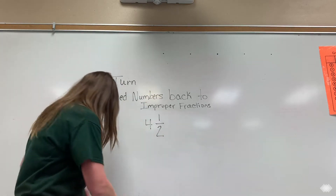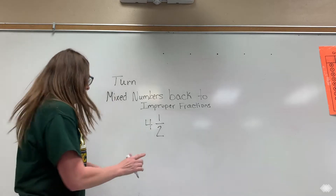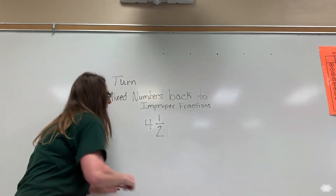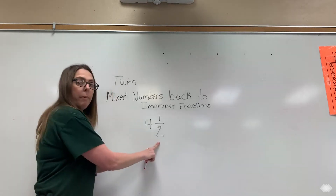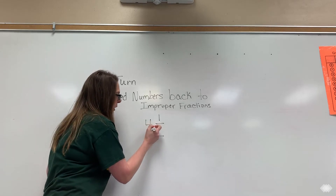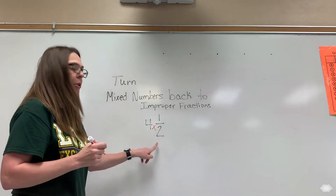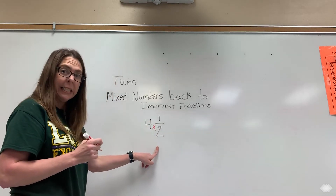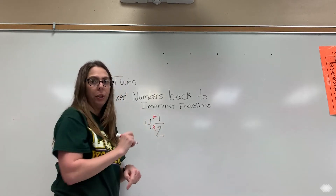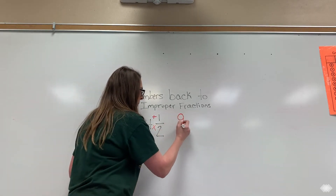The way that you do that is you take your denominator and multiply it with your whole number. So four times two is eight, and then you add your numerator, so that gives us nine. That becomes our numerator.